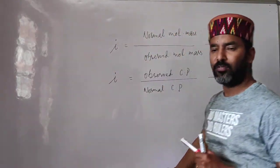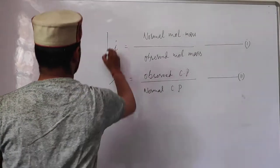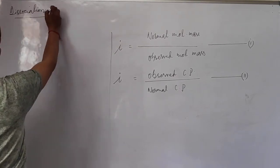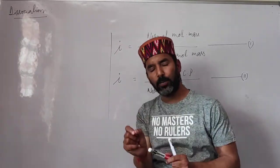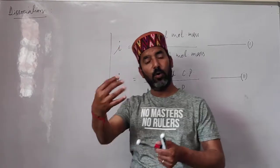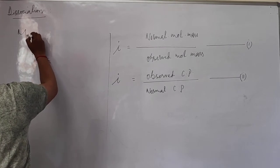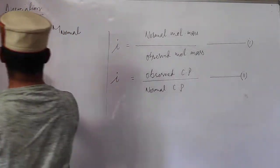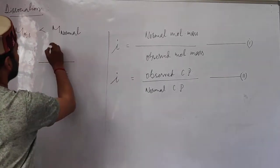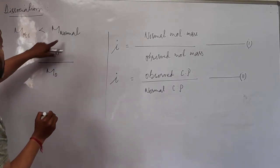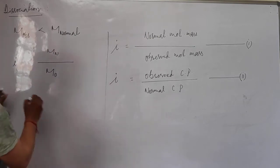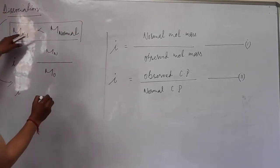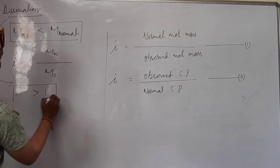Now let's discuss the value of the Van't Hoff factor in the case of dissociation and association. In the case of dissociation, the number of solute particles increases in the solution, so the observed colligative property is greater than the normal colligative property. This means the observed molar mass is less than the normal molar mass. Since iota equals normal molar mass divided by observed molar mass, the numerator is greater than the denominator, so iota will always be greater than one in the case of dissociation.